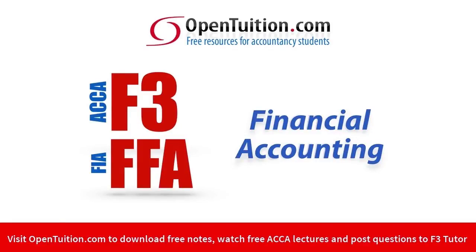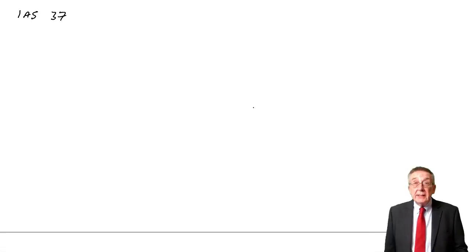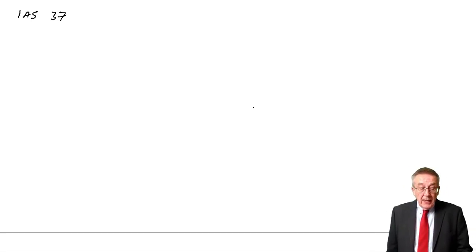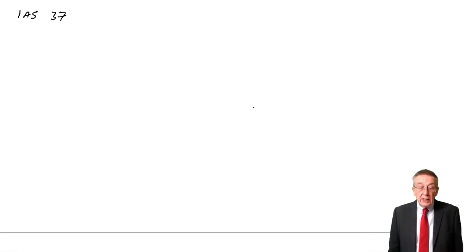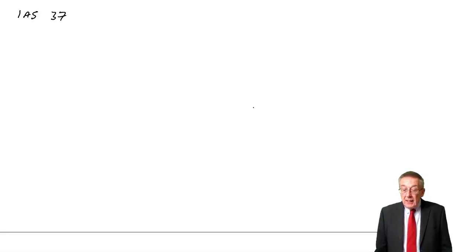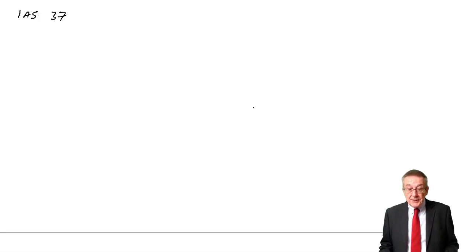This is a lecture from OpenTuition. To benefit from the lecture you should download the free lecture notes from OpenTuition.com. This lecture is on accounting standard number 37, and I hope you've printed out the lecture notes because it's on what we call provisions, contingent liabilities and contingent assets.